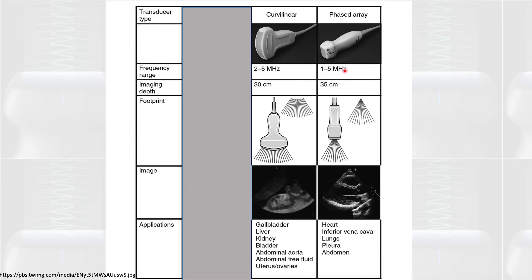The other two probes are low-frequency probes. Because of their lower frequency, they can penetrate much deeper — up to 30 or 35 centimeters. The cardiac or phased array probe emits beams from one point, which is advantageous for looking at the heart because you can get the beams between the ribs. The curvilinear probe, also known as the abdominal probe, is the classic one used for examination of abdominal organs.